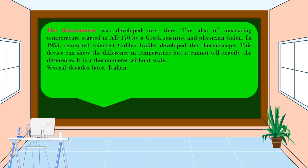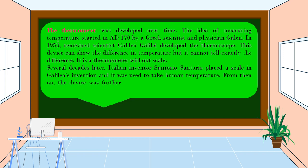Several decades later, Italian inventor Santorio Santorio placed a scale in Galileo's invention and it was used to take human temperature. From then on, the device was further developed to become more accurate and user-friendly.